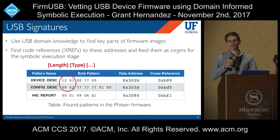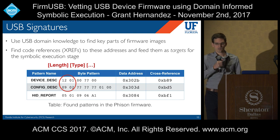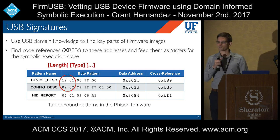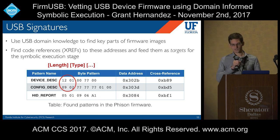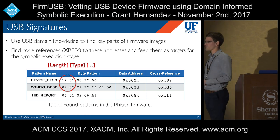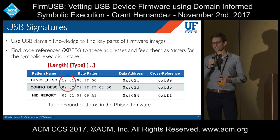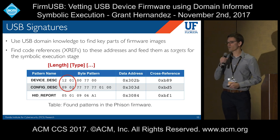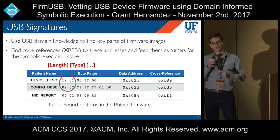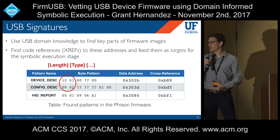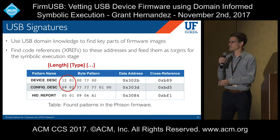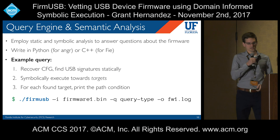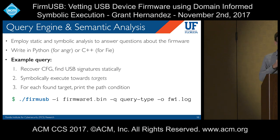With our lifters developed, we applied FirmUSB to firmware images. Our first major step was a static analysis pass on firmware images, gathering USB signatures. This was a way to determine, from the sea of bytes, which targets to focus on. Using USB-specific knowledge — constants well-defined in the USB protocol — we find specific descriptors and other USB-related byte strings, then find cross-references to them in the code. These become our targets, which we symbolically execute towards to find the path conditions.